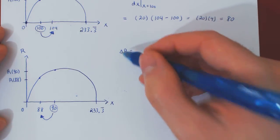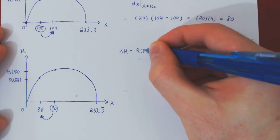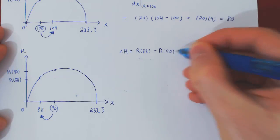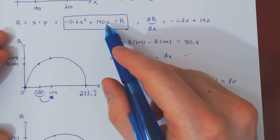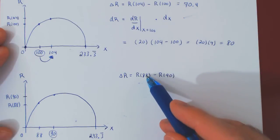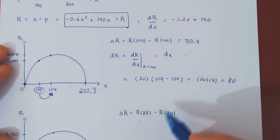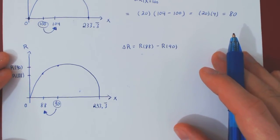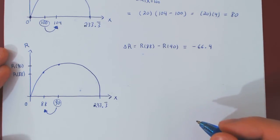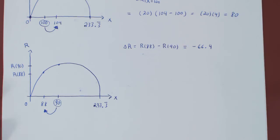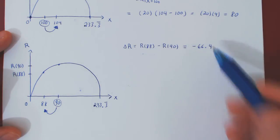The exact change in revenue is always the final value minus the initial one: R(88) minus R(90). Replacing x by 88 to find R(88) and x by 90 to find R(90), and working through the calculations, you should arrive at an exact change in revenue of negative $66.40. So as sales decrease from 90 to 88 units, revenue decreases by exactly $66.40.